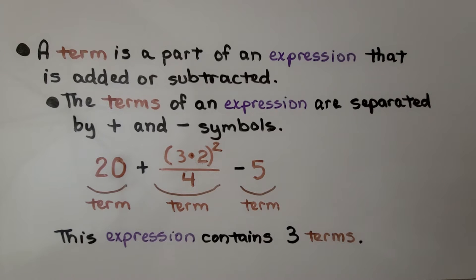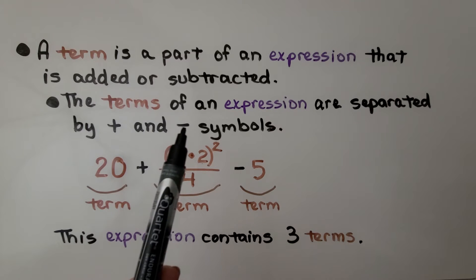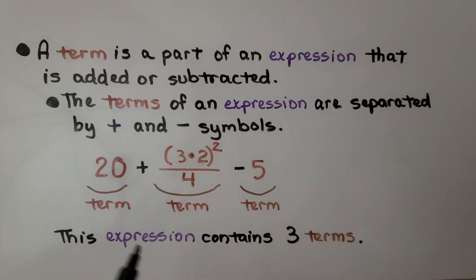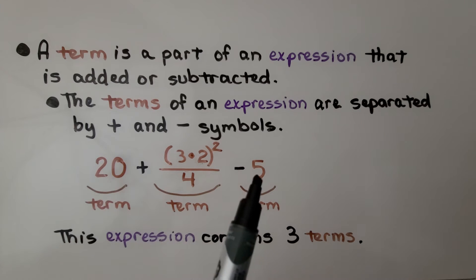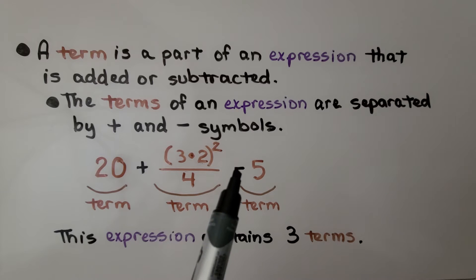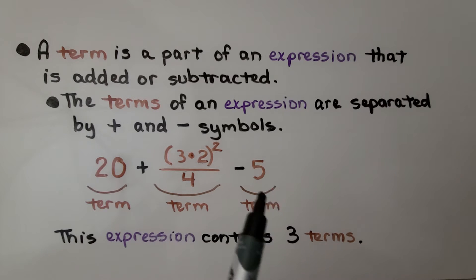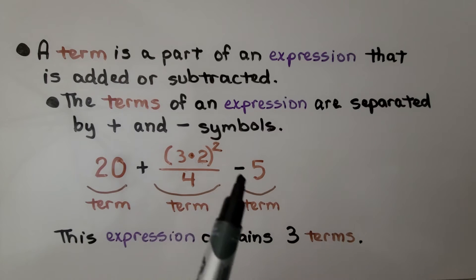A term is a part of an expression that is added or subtracted. The terms of an expression are separated by an addition symbol and a subtraction symbol — a plus and a minus. In a numerical expression, terms are separated by plus and minus signs, so an expression with a plus sign and a minus sign contains three terms.